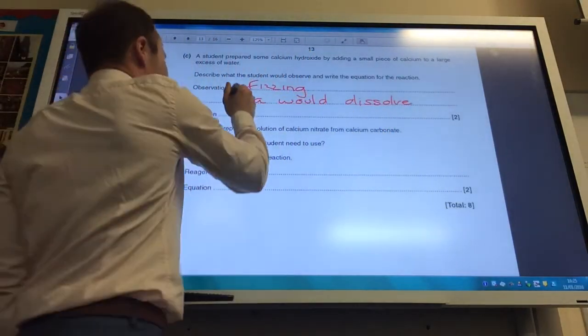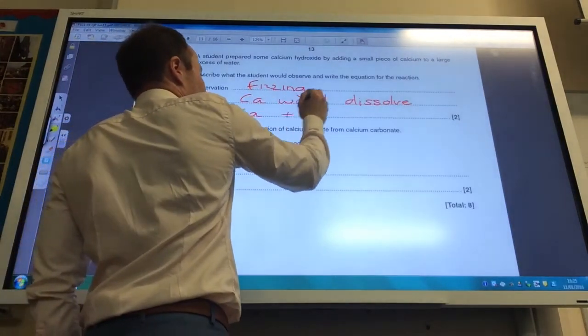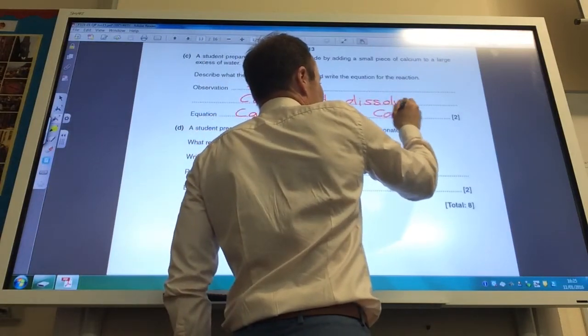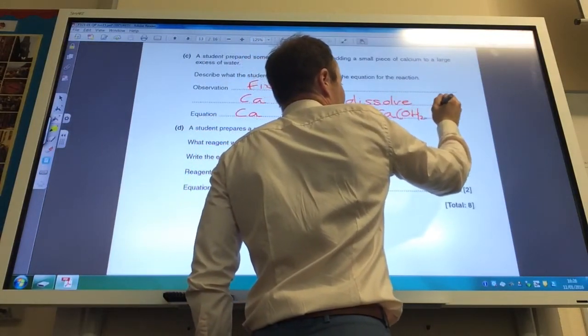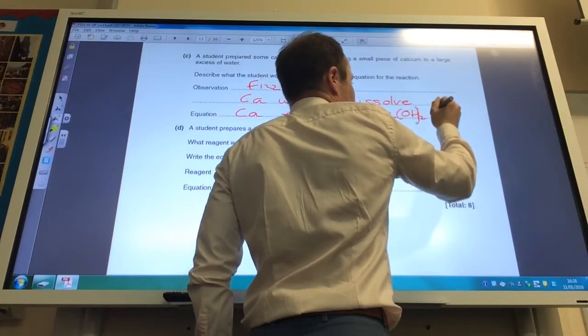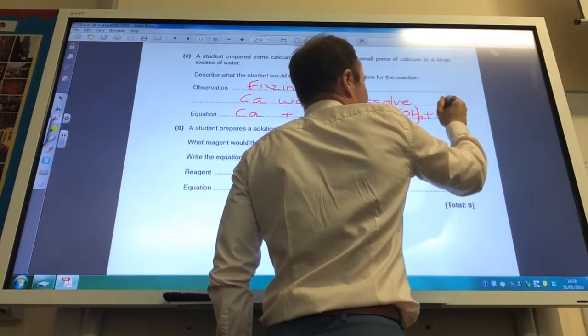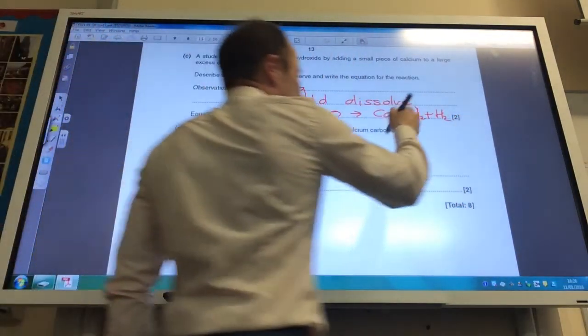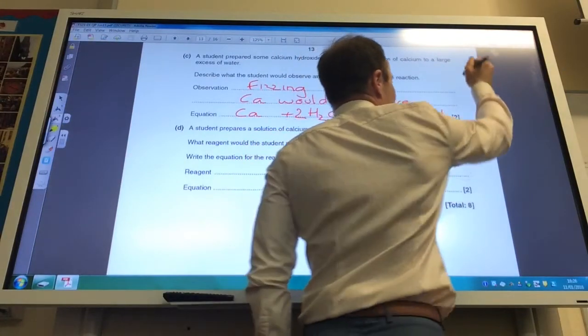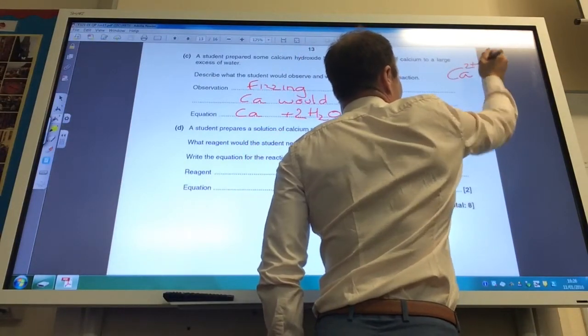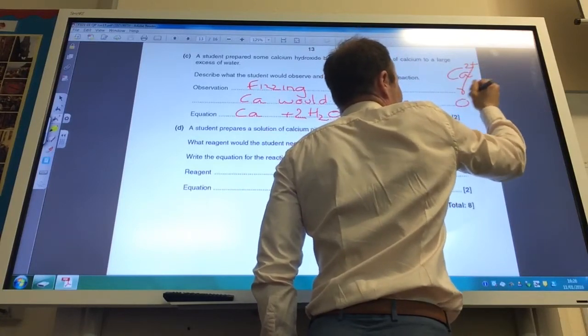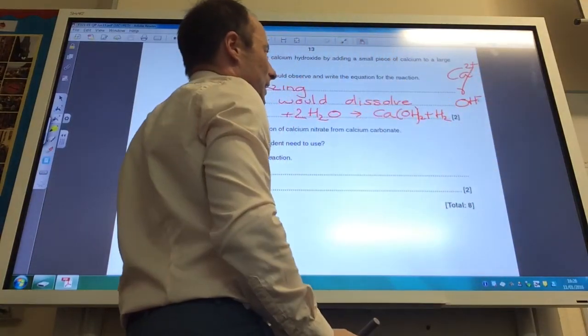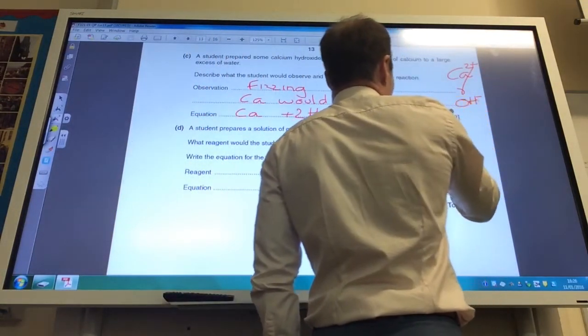Write an equation. So you've got calcium plus water gives me calcium hydroxide plus hydrogen gas. To balance that, you need two waters. Why is that the formula of calcium hydroxide? Well, calcium is Ca2 plus, hydroxide is OH minus. So you need two of those for every calcium that you have. So therefore the... Done.